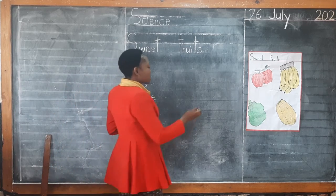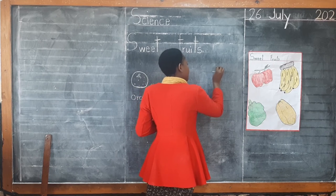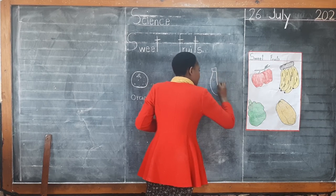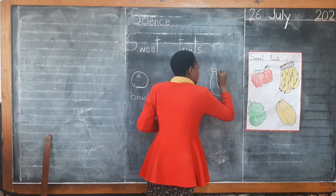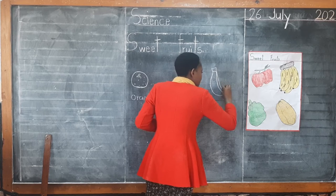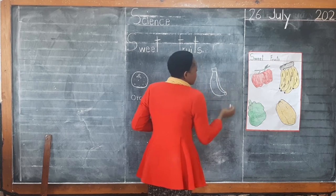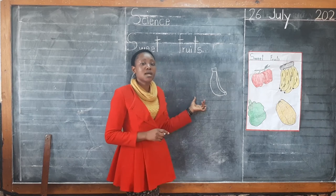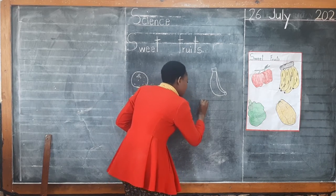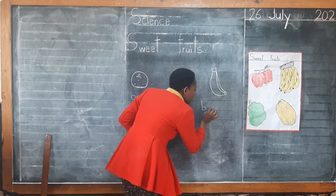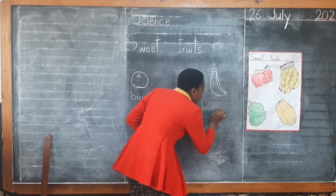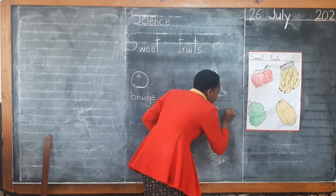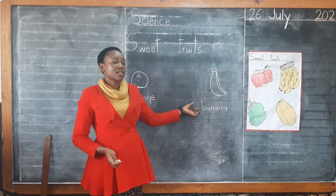So we are going to draw another sweet fruit here. This one we have on our chart, and we also saw it outside. This one here is a banana, and we are saying a banana is a sweet fruit. So we are also going to write 'banana'. Remember, the word should always sit nicely on the line. A banana is a sweet fruit.